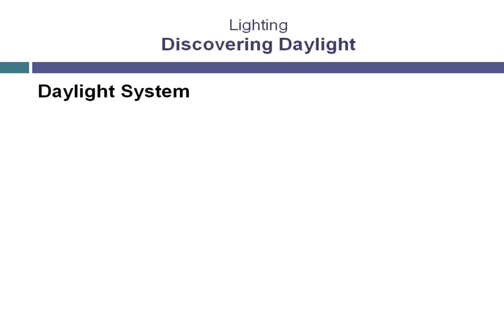Let's begin our discussion of direct lighting by an introduction to the daylight system. The daylight system is used to light exterior scenes or interior scenes that are illuminated by daylight, as the name would imply. There's quite a bit going on in this daylight system. There's a direct light as part of the system — a light that comes directly from a light source and travels to a surface.